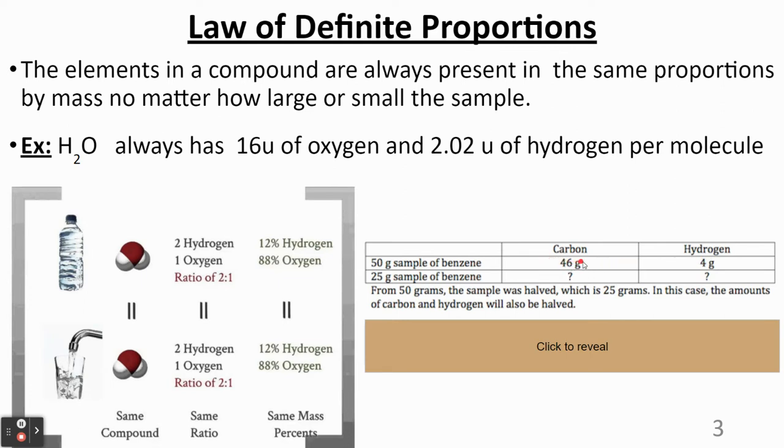And you can figure out the percentages. You can say that there's 46 divided by 50 times 100. 92% of benzene is carbon. And then the rest, you can just do 100 minus 92 or 4 divided by 50 times 100. That's 8%. So the percentage by mass is going to be the same regardless of the sample size.